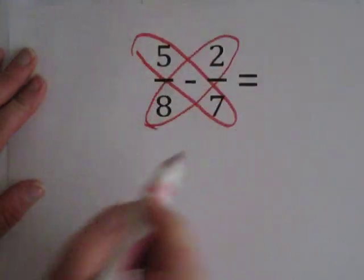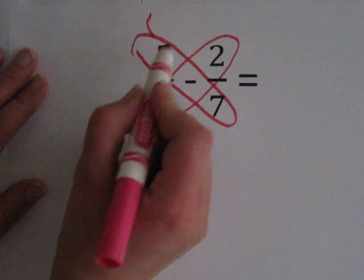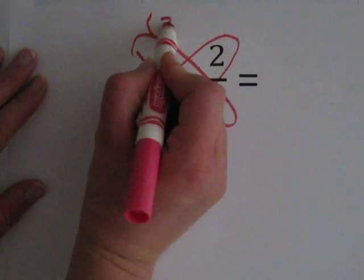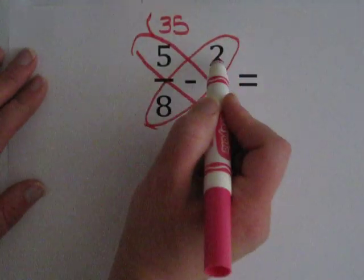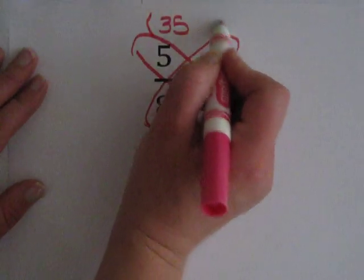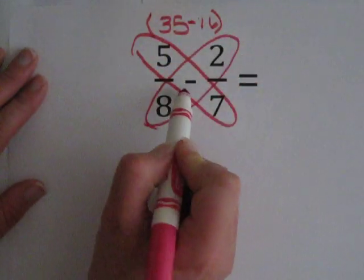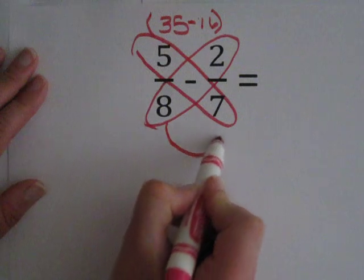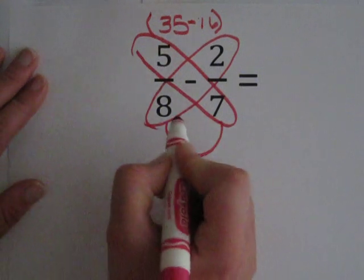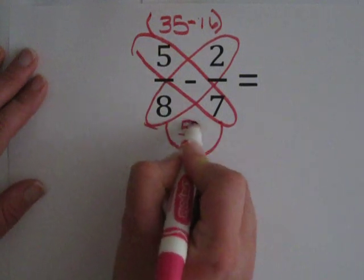We multiply across. 7 times 5 is 35. 8 times 2 is 16. We subtract those numbers because now we are subtracting. We multiply the two bottom numbers: 8 times 7 is 56.